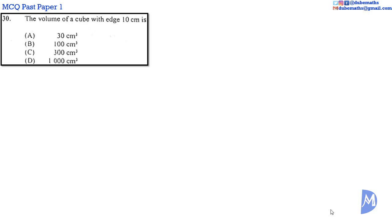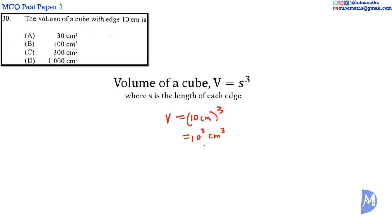Question 30. The formula for volume of a cube, V, is equal to S cubed, where S is the length of each edge. Therefore, the volume of this cube is equal to 10 centimeters cubed. It is equal to 10 cubed centimeters cubed. 10 cubed is equal to 1,000. 1,000 centimeters cubed. The answer is D.